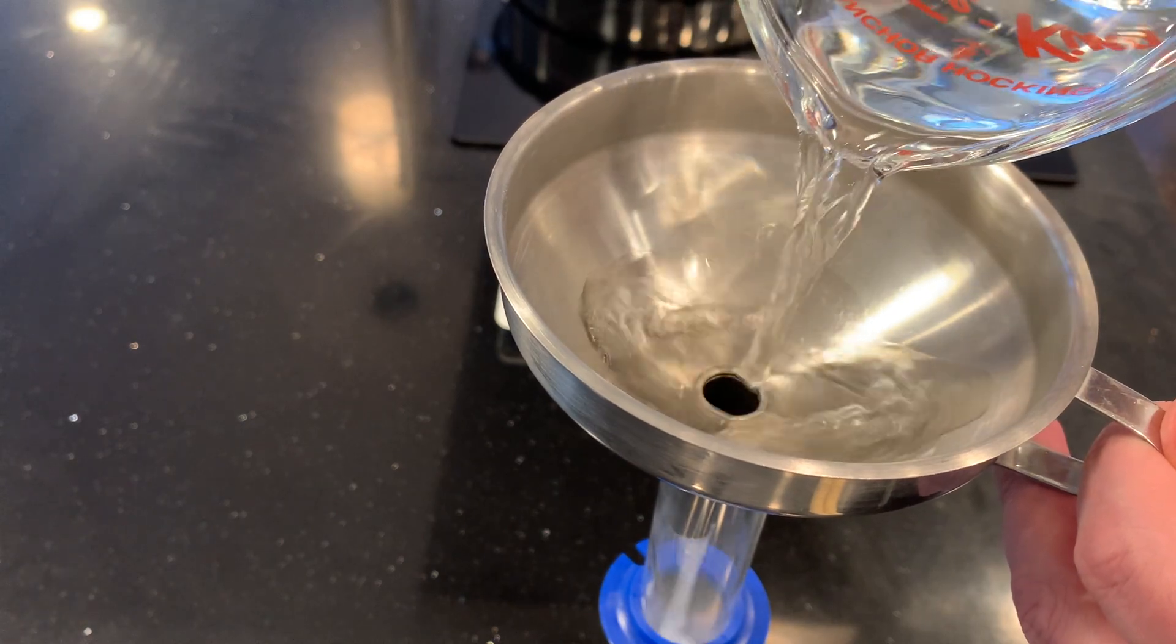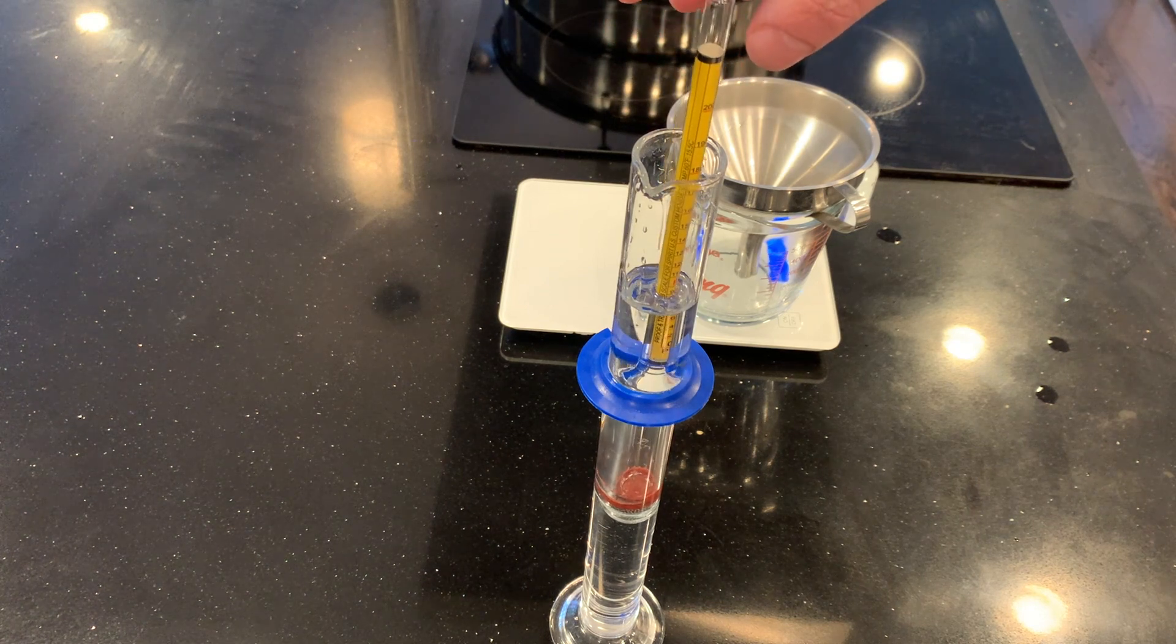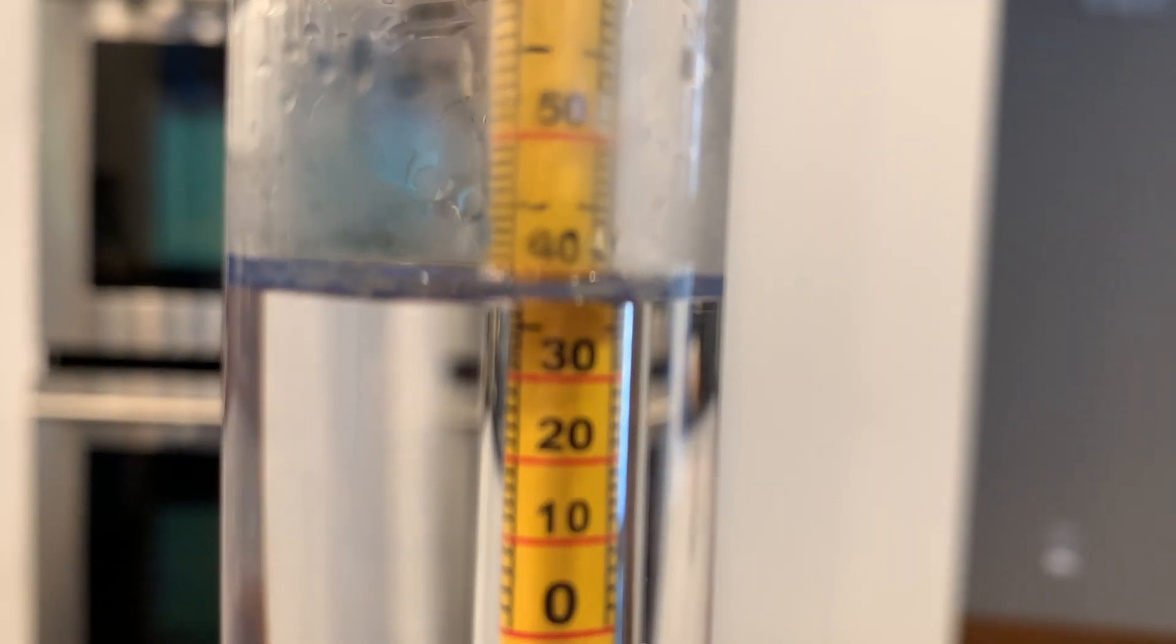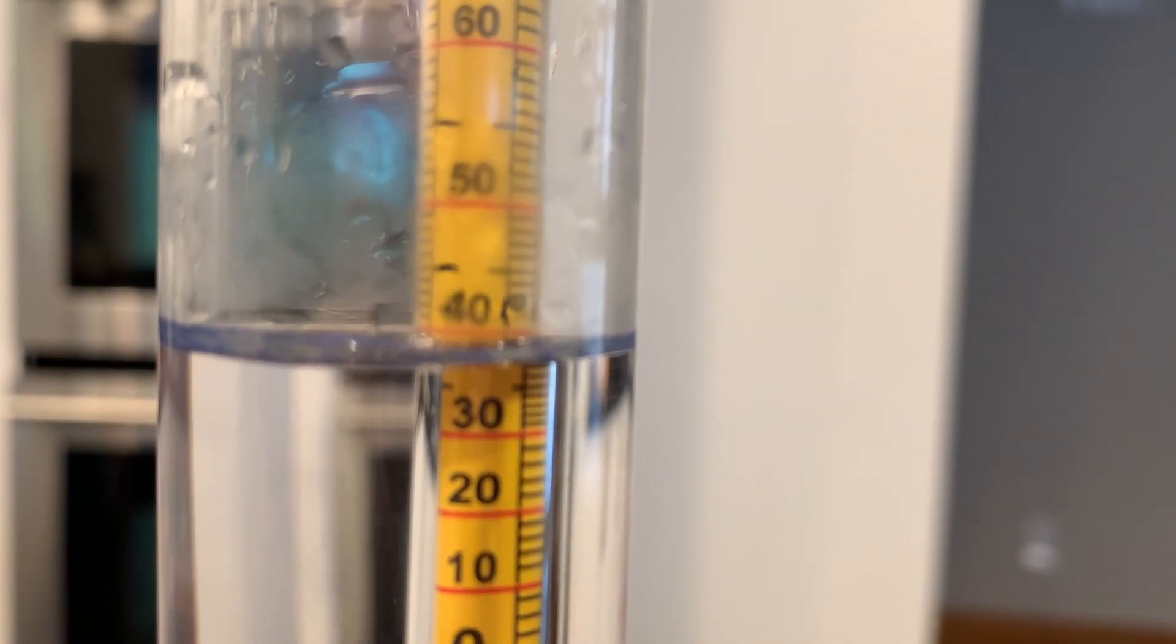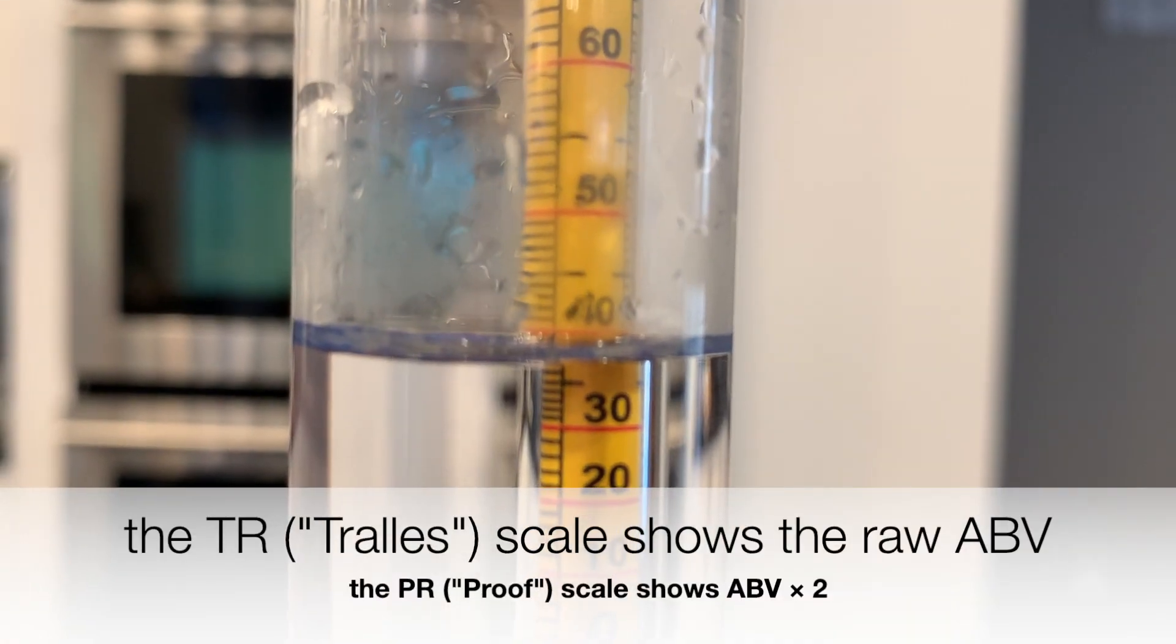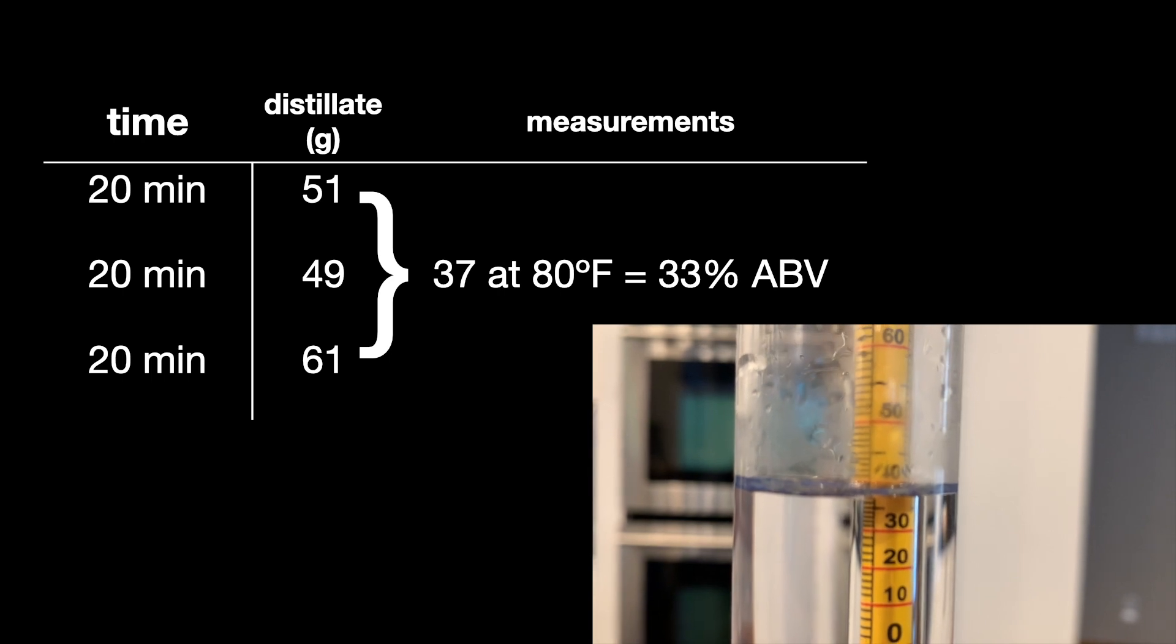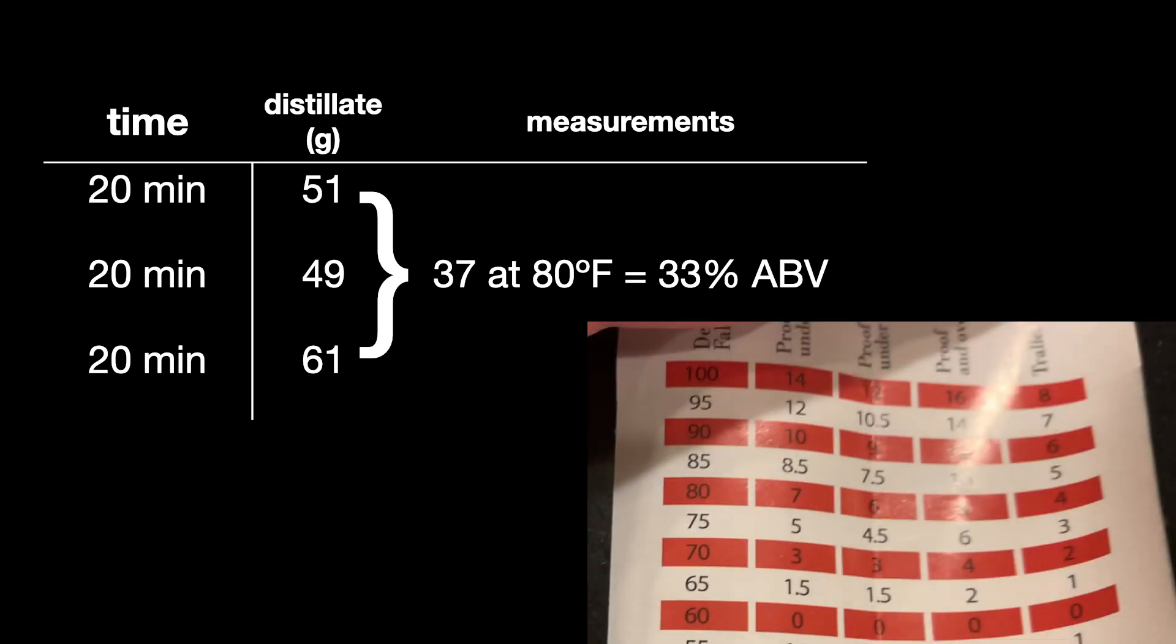Got to wait for any bubbles to disappear. Spin it around a bit. And it's a little slanted. It's hard for it to rest evenly in the tube. So what I see here, that looks like from the bottom of the meniscus, it looks like 37. So that's the scale. That's the alcohol percentage, 37. But there's a temperature adjustment. The temperature is 80 degrees Fahrenheit. This scale is calibrated to 60 degrees. But you have to adjust the percentage by one for every five degrees Fahrenheit. So I have to subtract four percentage points. So this should be 33%. So that's the measurement I'm getting, 33% alcohol.